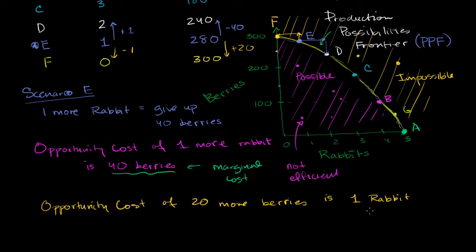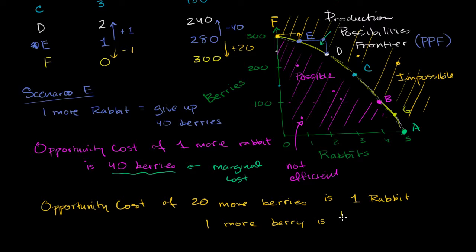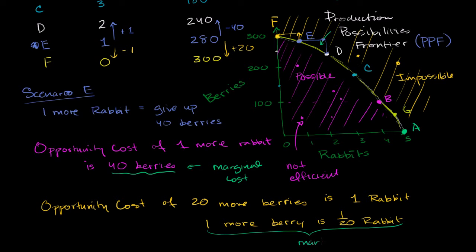Now, this right over here is not a marginal cost, because I'm talking about the cost of 20 more units, not just one. If I want to write this as the marginal cost of one more berry, then I could say: if 20 berries is one rabbit, you could essentially divide both sides by 20. So one more berry — assuming it's somewhat linear right over here — one more berry, if we divide both sides by 20, is 1/20th of a rabbit. So if I go for one extra berry sitting in Scenario E, on average I'm going to get 1/20th less of a rabbit. And when I phrase it this way, it is being phrased as a marginal cost.